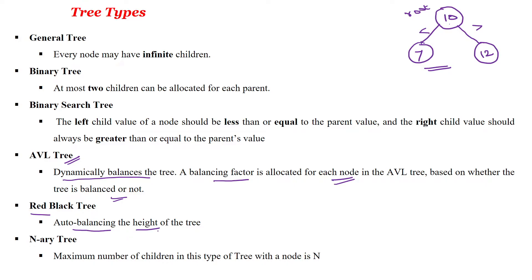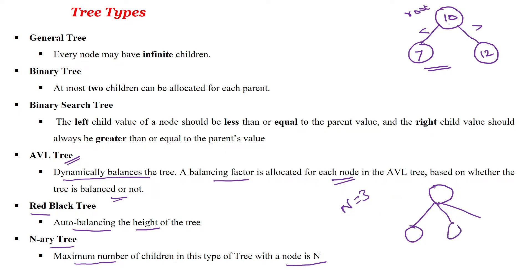Another type is the N-ary tree, where any node will have at most N number of children. For example, if N equals 3, each node may have at most three children. So this kind of tree is called an N-ary tree.